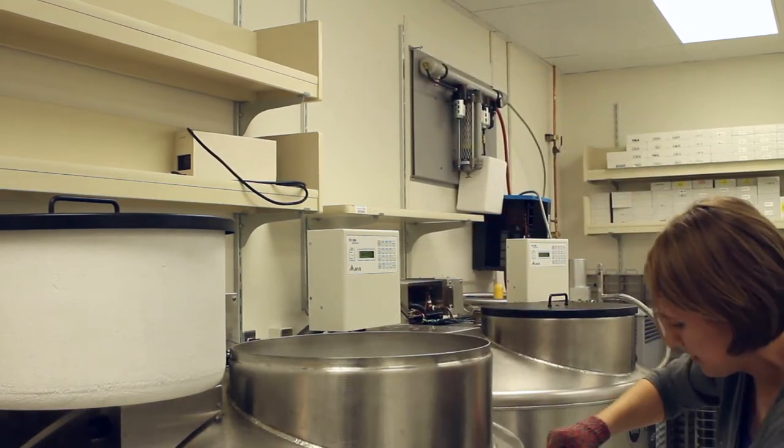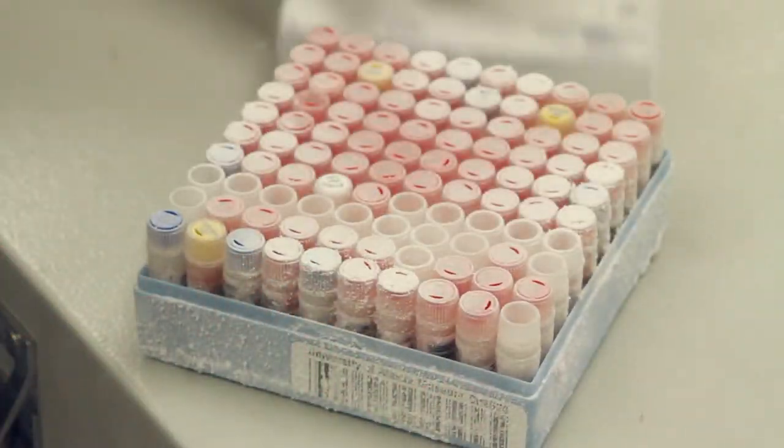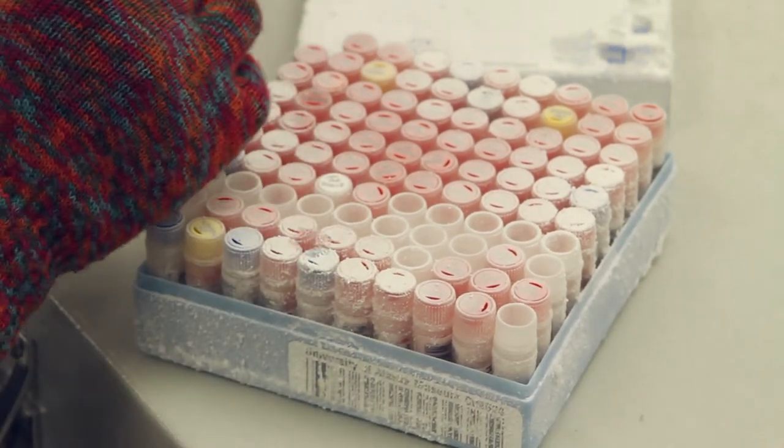They're labeled, so they'll tell you the number with the barcode, what type of tissue it is, and then all the different colors on the caps indicate different tissues. For instance, purple is brain, red is traditionally heart or tissue, blue is muscle.